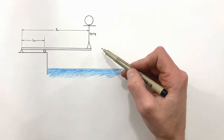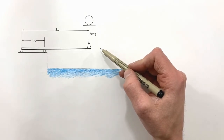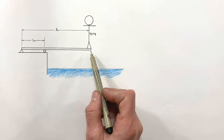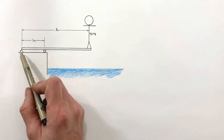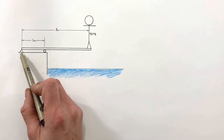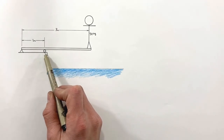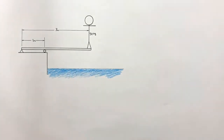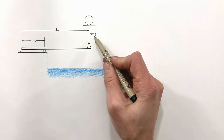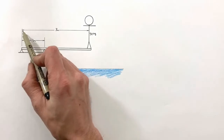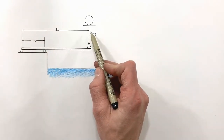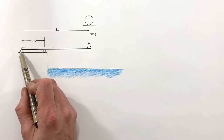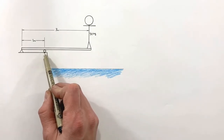Today we're going to take a look at the aptly named diving board problem. This consists of a person standing on the end of a diving board. We're going to look at the forces from two supports on the diving board when the entire system — that is the person and the diving board — are in equilibrium. We have a 50 kilogram person standing on the end of a three meter long diving board, supported by a pin at one end and a roller.